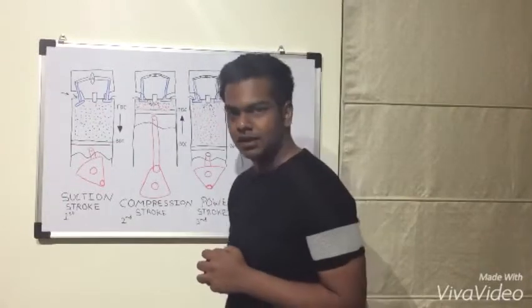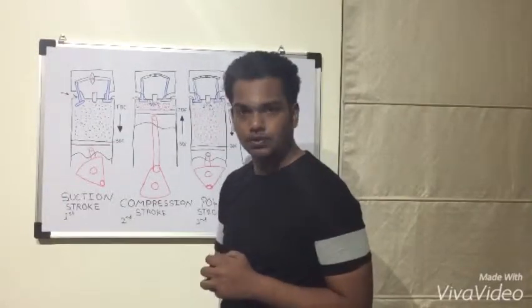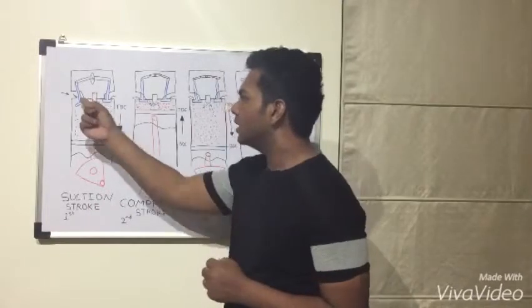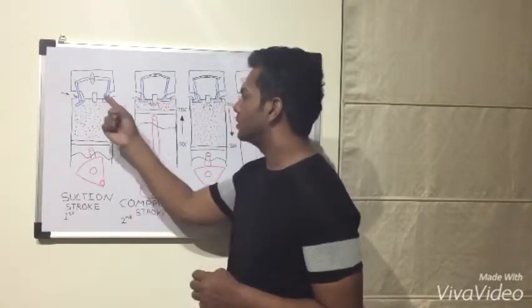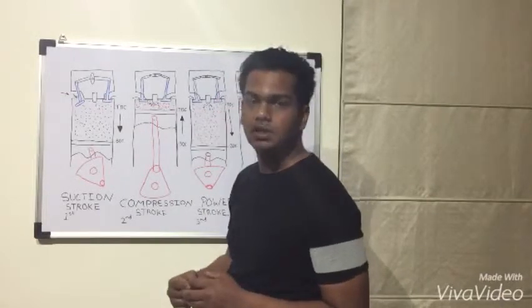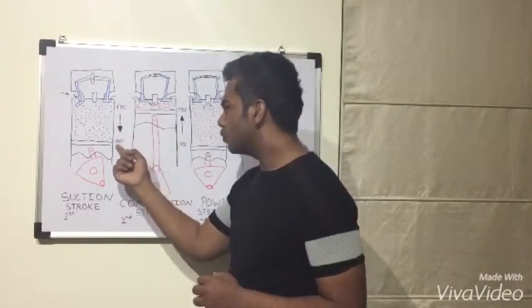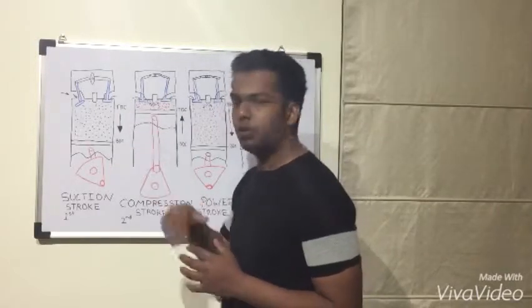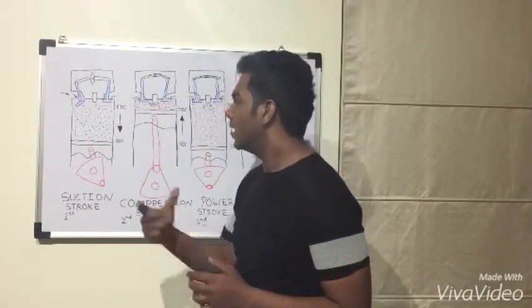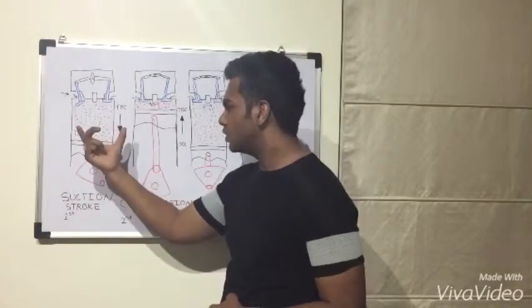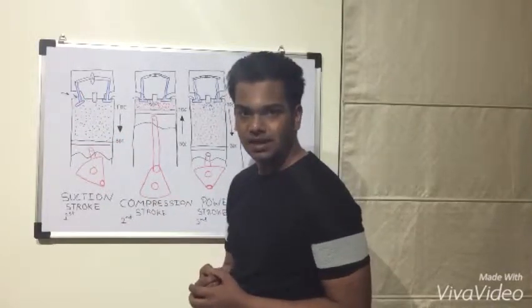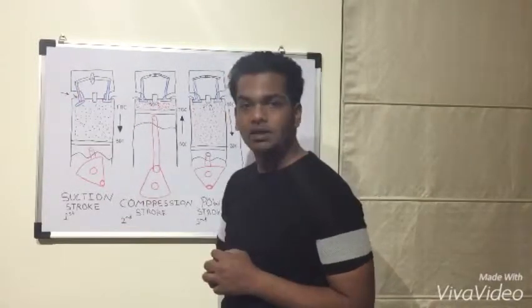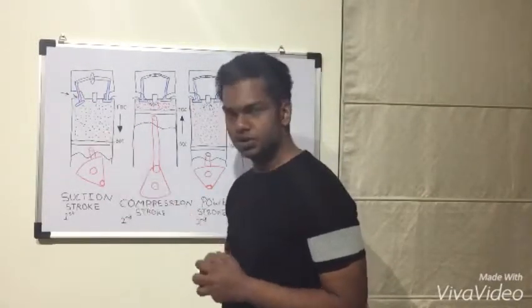The 4 stroke SI engine consists of 4 strokes. The first stroke is the suction stroke in which the intake valve stays open, the exhaust valve stays shut, and the piston travels from the TDC towards the BDC, which is the top dead centre and the bottom dead centre. As the piston travels from the TDC towards the BDC, suction is being created and air fuel mixture is being sucked inside by the intake valve into the combustion chamber.